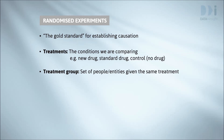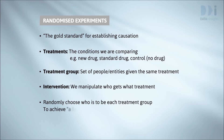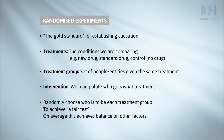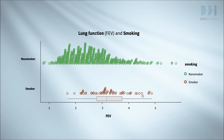This random assignment tends to balance the groups on everything except the treatment they're receiving, so that when we compare treatment groups we are comparing like with like and conducting a fair test. If we were able to do a randomised experiment for our motivating example, we would randomly choose which children would smoke and which would not. This random assignment would tend to balance the smoking and non-smoking groups on age and everything else, giving us a fair comparison. In this case, however, we couldn't ethically conduct such an experiment because we can't purposefully expose people to known hazards.